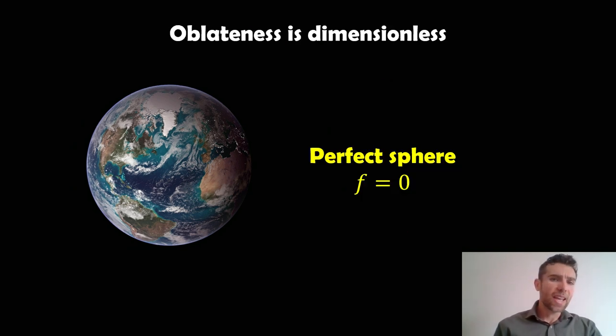Now, it's dimensionless. So oblateness, you get a number, essentially. If it's a perfect sphere, then it's zero. Perfect sphere is zero.